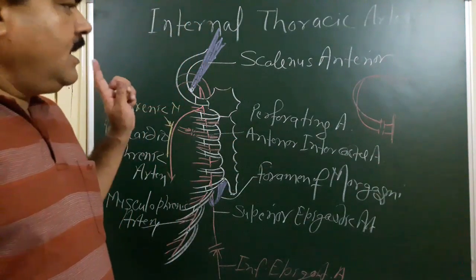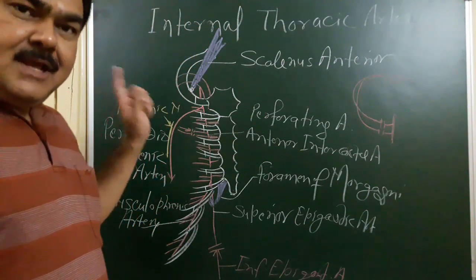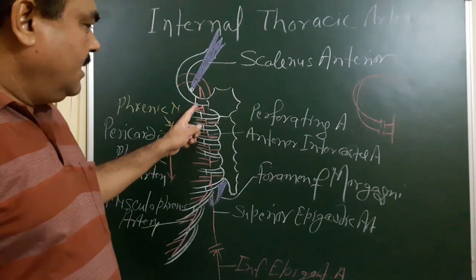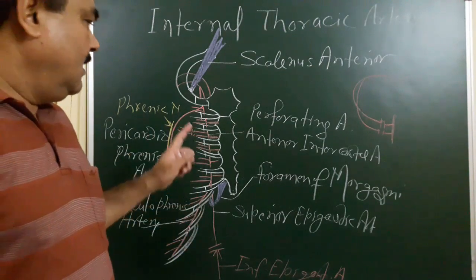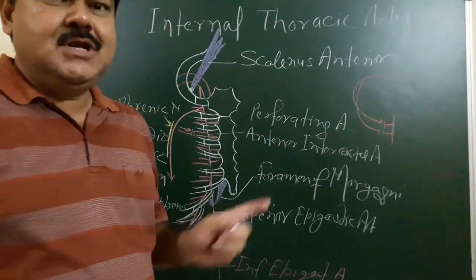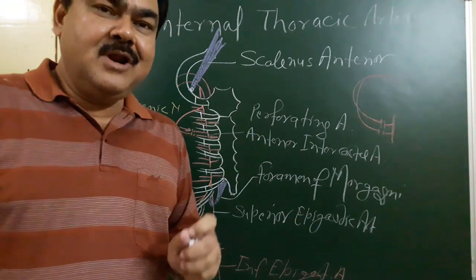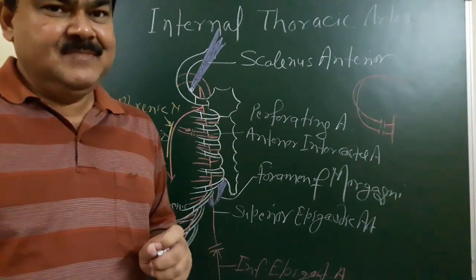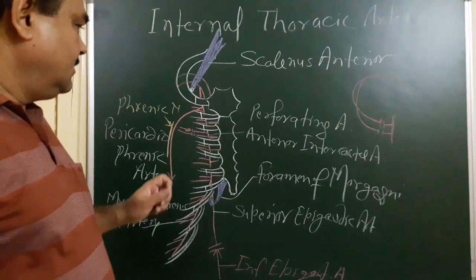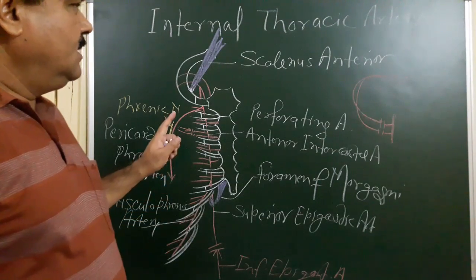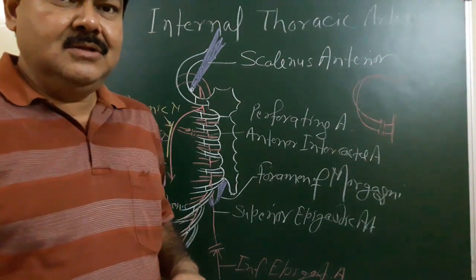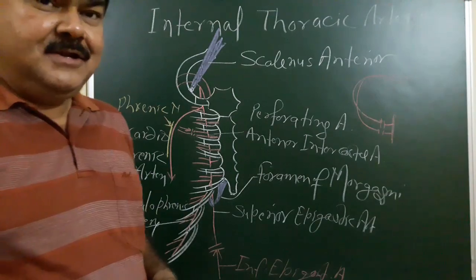One important point particularly: this is very important — this artery can be used in cases of coronary artery bypass surgery. So this is all about the internal thoracic artery. Thank you.